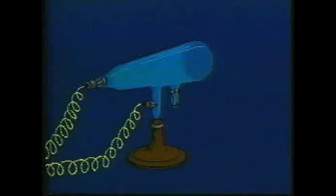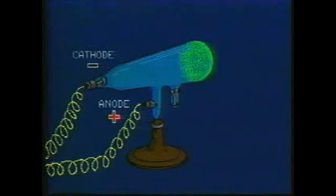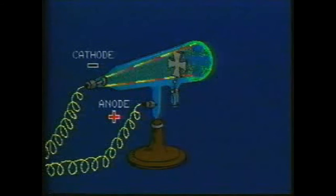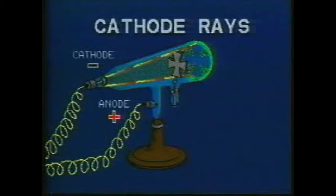William Crookes designed more complex vacuum tubes and showed that whatever caused the glow seemed to stream from the cathode or negative terminal. By interrupting this stream from the cathode, he showed that it traveled in straight lines. The stream also caused an increase in temperature of objects in its path, and it also produced a mechanical force, a push. Crookes guessed that these so-called cathode rays were in fact a stream of particles.